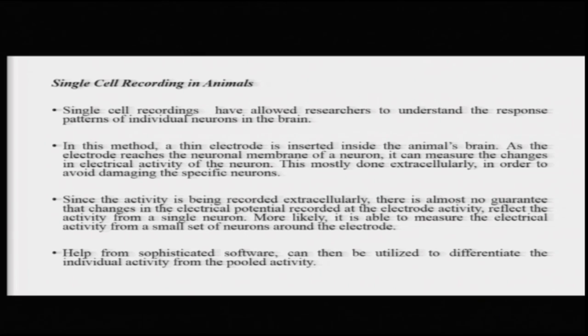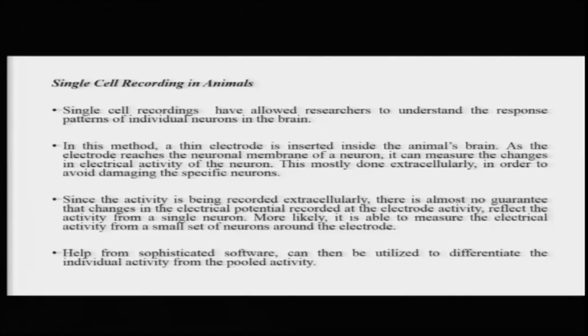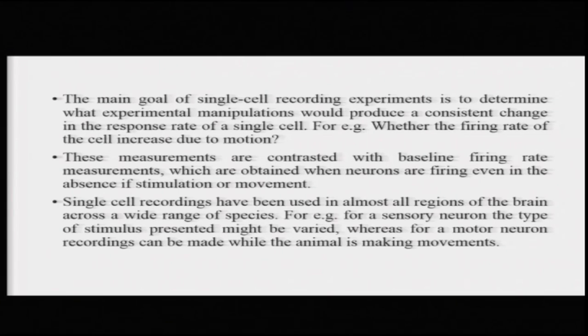This recording is mostly done extracellularly, because inserting the electrode inside the neuronal membrane of a particular neuron risks damaging it. So the electrode picks up the electrical activity happening around itself from surrounding neurons. There is almost no guarantee whether the electrical activity recorded by the single electrode is from one neuron or a bunch of neurons. To solve this puzzle, sophisticated software is used to separate the pooled activity recorded on the single electrode and isolate the activity of individual neurons.